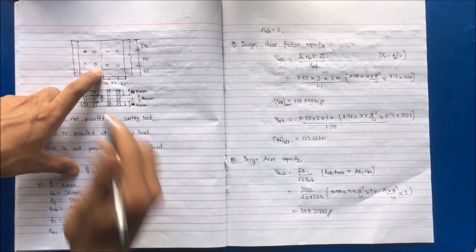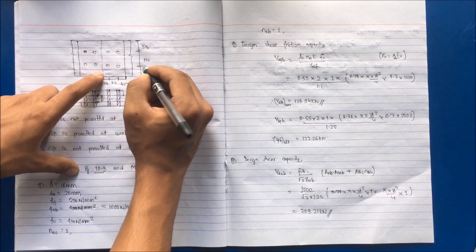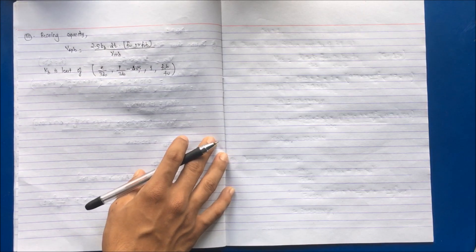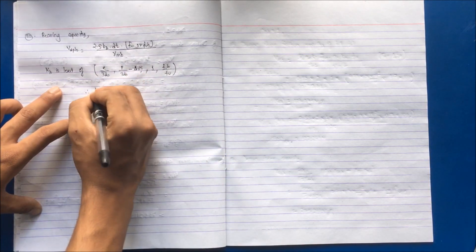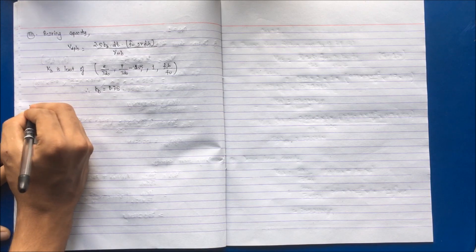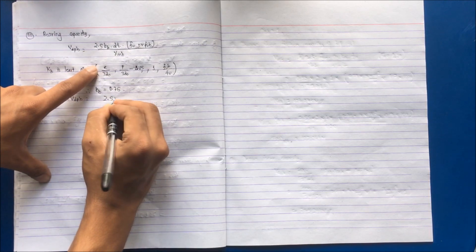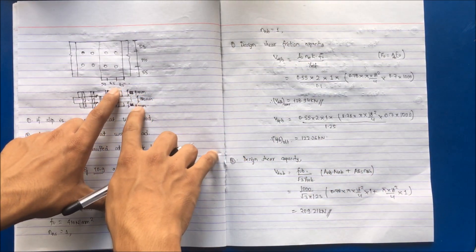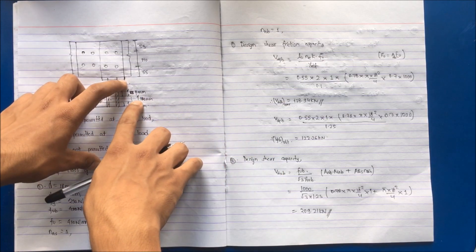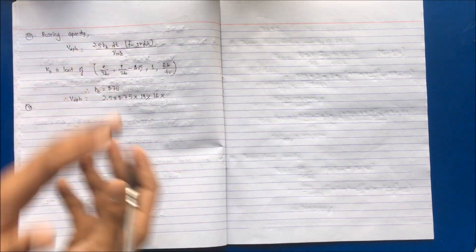From the figure, the values of E and P are provided. Note that the value of E is to be taken with respect to the plate itself in the direction of load application. So E = 55 mm and P = 110 mm. Substituting these gives KB = 0.75 as the minimum value. For thickness, we have 8 mm + 8 mm = 16 mm and the plate is 18 mm, so the smaller value is 16 mm.